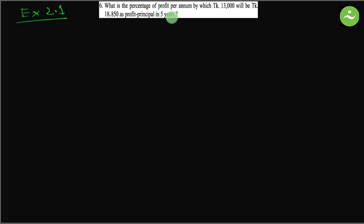So principal is 13,000, profit principal is 18,850. From here we get the profit, and then we have to find out the percentage of profit. Percentage of profit per annum means profit expressed as percentage or rate of profit.